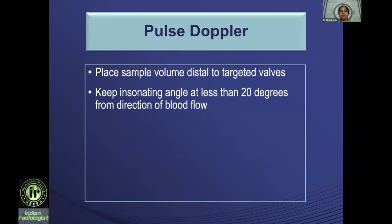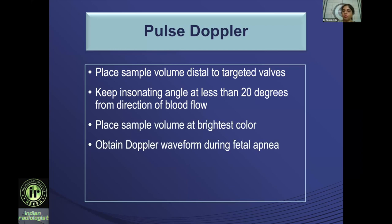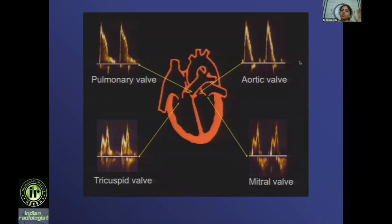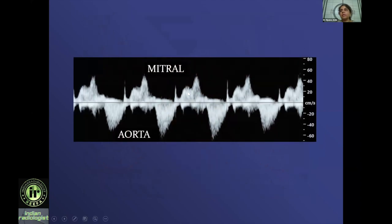For pulse Doppler, it is good practice to get used to where to place the sample volume and how to scan. You have to place the sample volume distal to the targeted valve, keeping the insonation angle at less than 20 degrees from the direction of flow. Whenever there is any pathology such as regurgitation, place the sample volume at the brightest color to get the maximum gradient or maximum velocity. Obtain Doppler waveforms during fetal apnea — not so much of a problem at 20 weeks. If you are insonating the tricuspid valve, the flow direction is from the atria to the ventricle, so the distal position is there. If you are insonating the pulmonary valve, flow is across the ventricles to the great arteries, so the distal position is further along. Typically the inflows have E and A waves and the outflows have an arterial kind of spectral pattern.